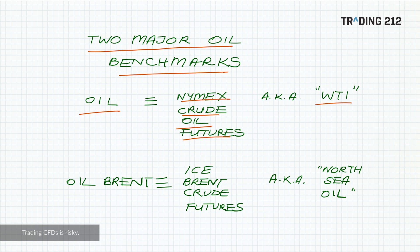Futures contracts on an exchange are standardized types and quantities of a certain product for delivery at a specified date in the future at a price that is agreed now. So this type of oil is a price for delivery at a specified date of an oil of a certain grade, and the delivery point happens to be an oil hub in a place called Cushing in Oklahoma in the United States.